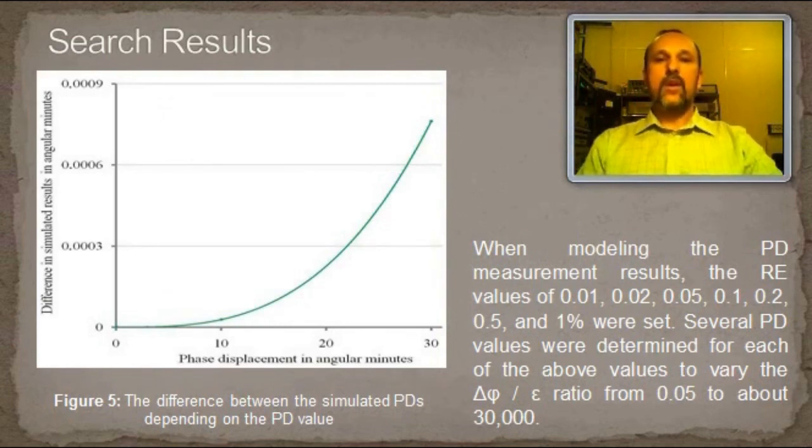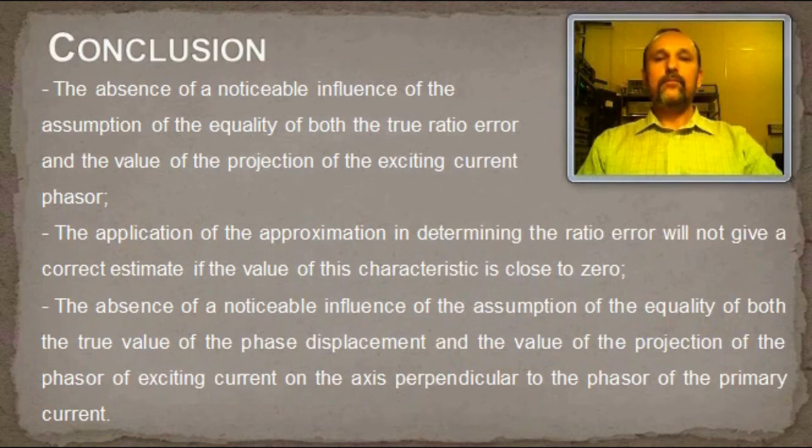Thus, the approximation in the measurement of the phase displacement does not distort the results obtained for the current transformer with errors corresponding to the accuracy class of 0.5. In assessing the correctness of the application of the approximation in determining the errors of the current transformer, it has been fixed the absence of a noticeable influence of the assumption of the equality of both the true ratio error and the value of the projection of the exciting current phasor.